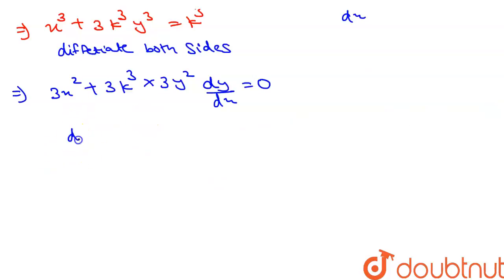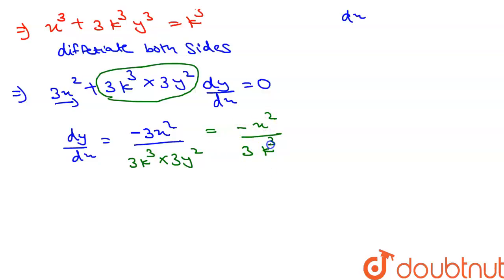dy by dx equal to, this term goes to right hand side. So we can write as minus 3 x square divided by this whole term goes to denominator. So we can write as 3 k cube multiply 3 y square. So from here we can write as minus x square divided by 3 k cube y square.